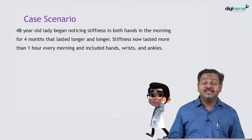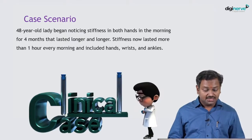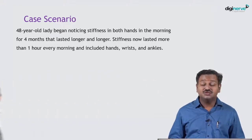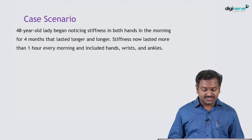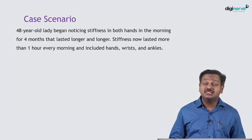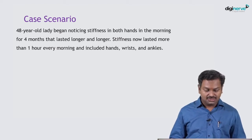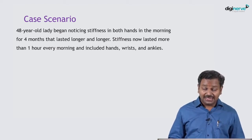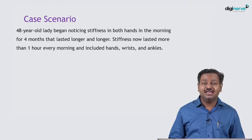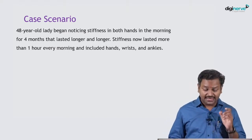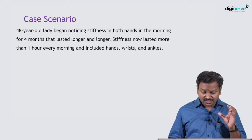We have a 48-year-old woman who has come with a history of stiffness of the hands in the morning for the past four months, which is lasting longer and longer. She says the stiffness now lasts for at least an hour every morning and includes the hands, wrists, and ankles. So here we have a middle-aged lady presenting with polyarthritis — multiple joints involved.